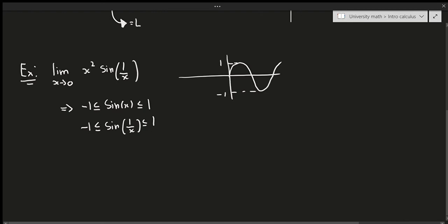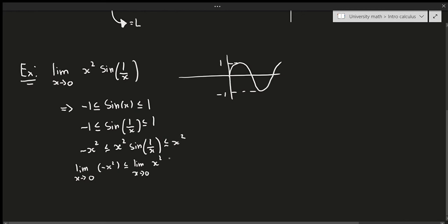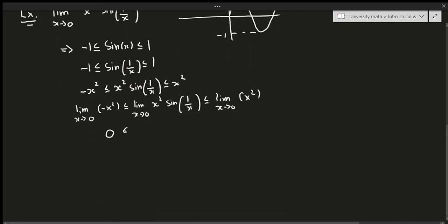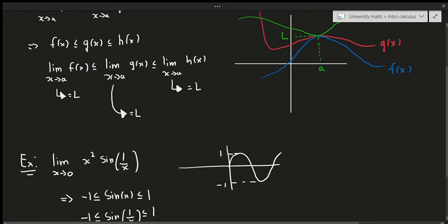Now we multiply all sides by x² (which is non-negative), giving: −x² ≤ x²·sin(1/x) ≤ x². Now we can take the limit as x approaches 0 from all three parts: lim(x→0) of −x² ≤ lim(x→0) of x²·sin(1/x) ≤ lim(x→0) of x². The outer limits are both 0, and we don't yet know the middle limit.